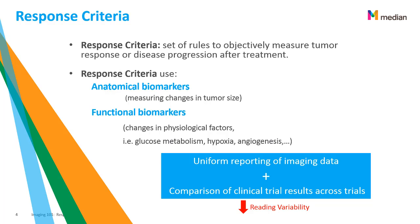Response criteria provide consistency and can help to lower the reading variability, which is inherent due to the complexity of the imaging data. It is important to keep variability as low as possible in order to obtain the best results in a clinical trial. If readers are looking for the same measurements measured the same way, it helps lower this potential risk.